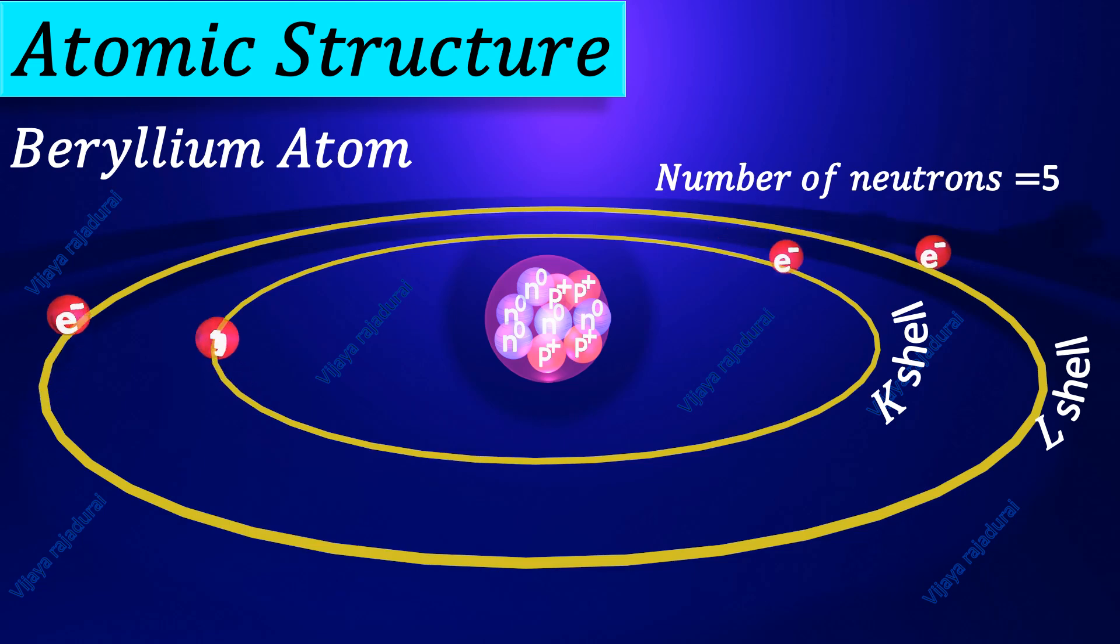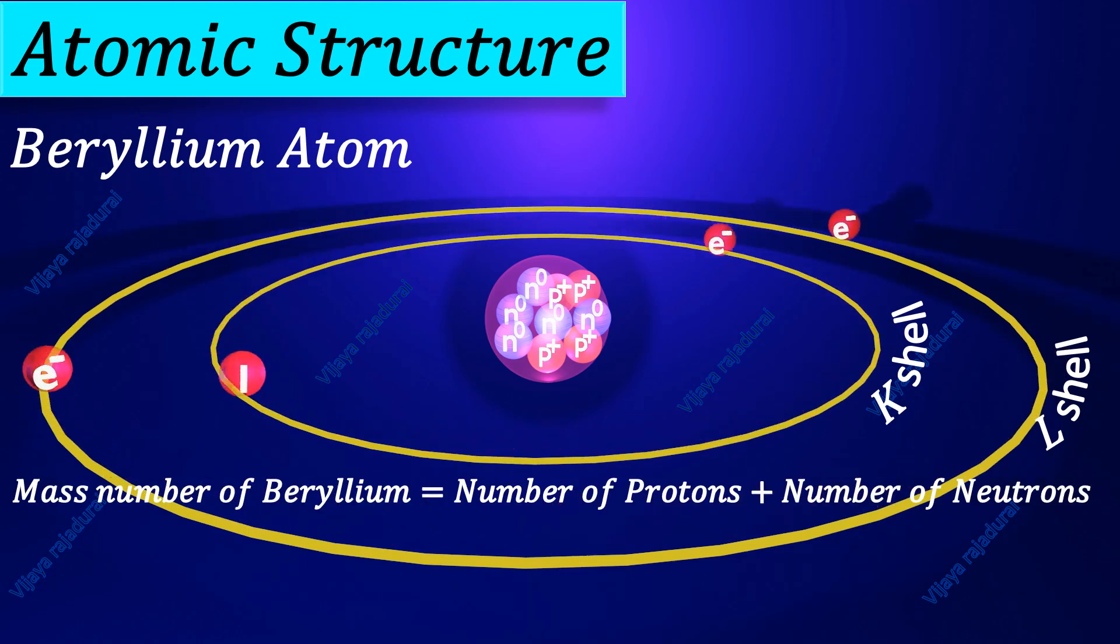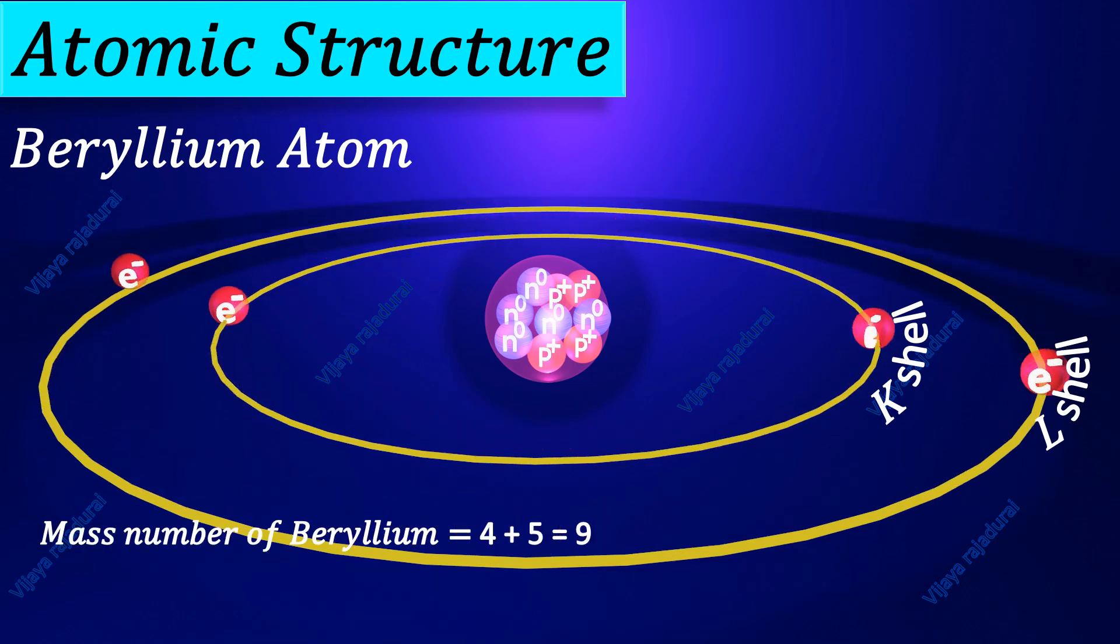Using protons and neutrons numbers, we can calculate mass number of Beryllium atom. Mass number of Beryllium can be calculated by sum of protons and neutrons. So, mass number of Beryllium is 4 plus 5 is equal to 9.